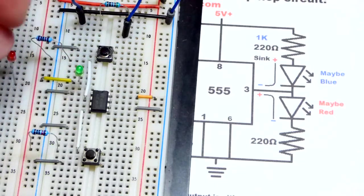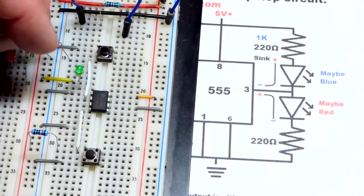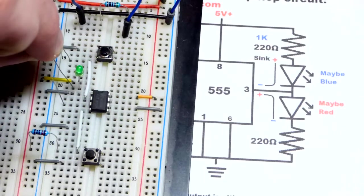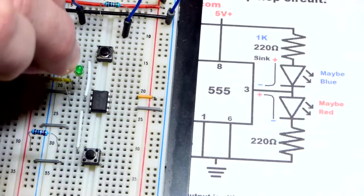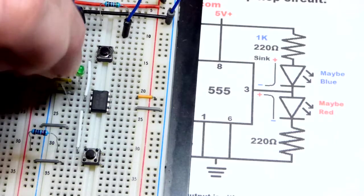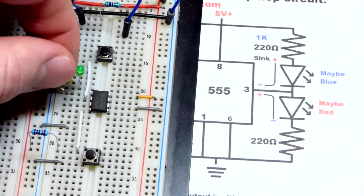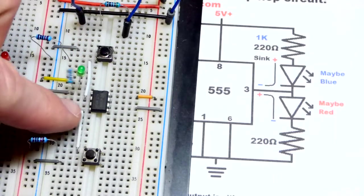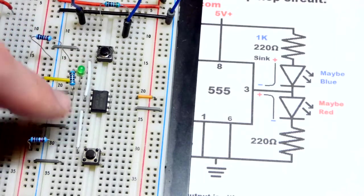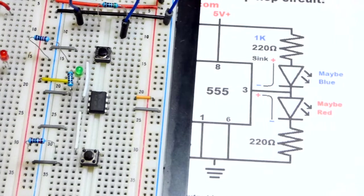So, we're going to take a 1 kiloohm resistor here, not the 220, because, as I said, the green LED gets a lot brighter, plus there's a bigger voltage difference than when the output is high. So, when the output's low, the green LED will light up. I do have the power supply off right now.